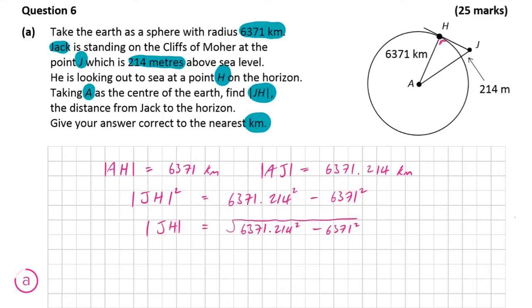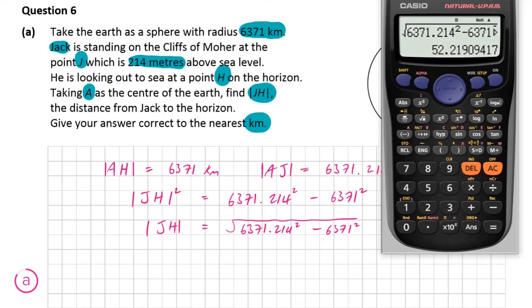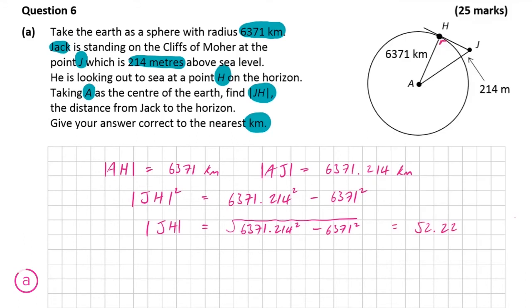So then that is going to leave us with the fact that JH is equal to the square root of the right hand side of the equation above. So we're just going to put that in the calculator now and see what our number is going to be. So our answer is 52.219 kilometers which because we've got to correct to the nearest kilometer is going to give us an answer of 52 kilometers.